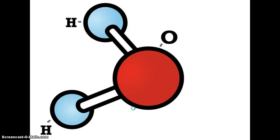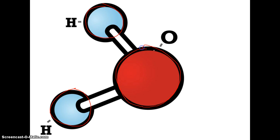Before we revisit how carbon interacts with various atoms because of the way its electrons are configured, a couple more general vocabulary terms. Each one of these colored balls — some blue and some red — represent individual atoms. And here we have these white bars that are joining these atoms together.